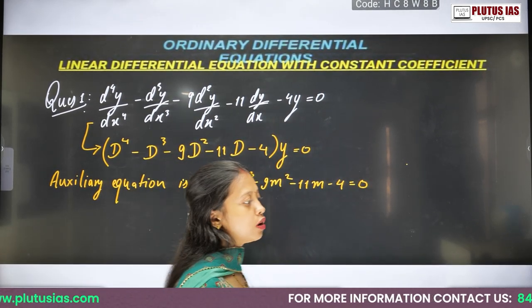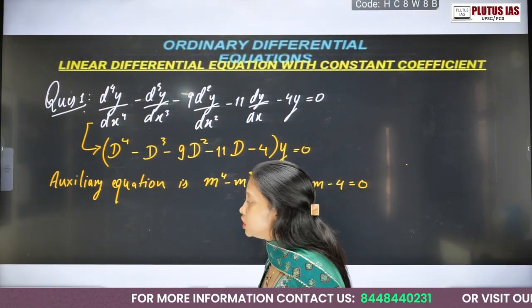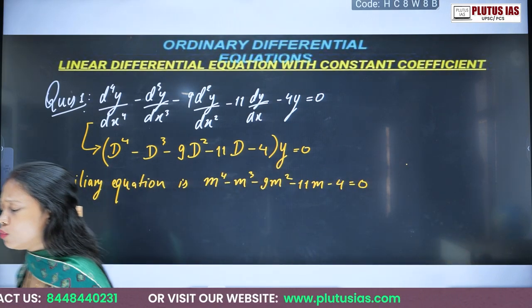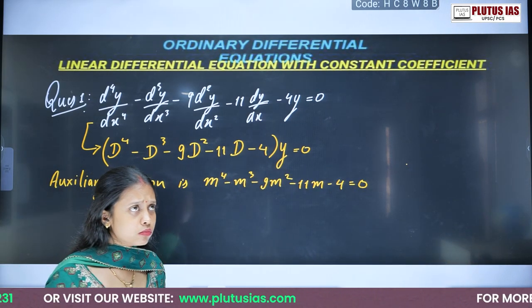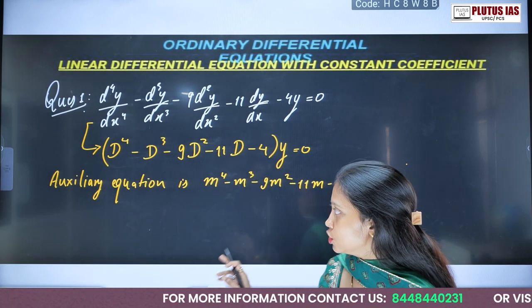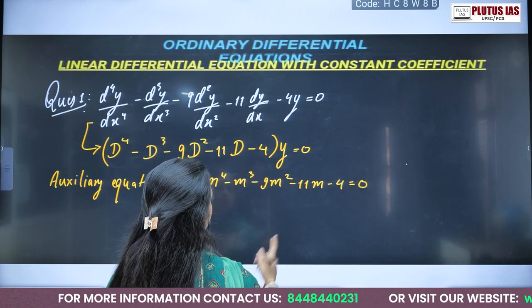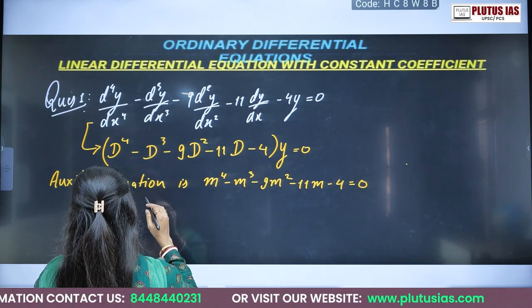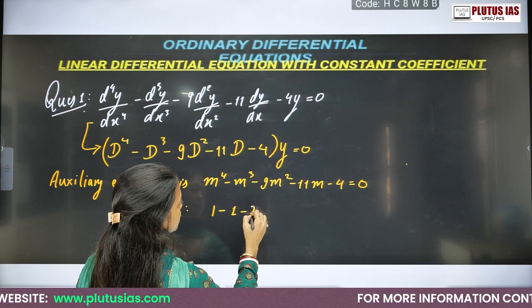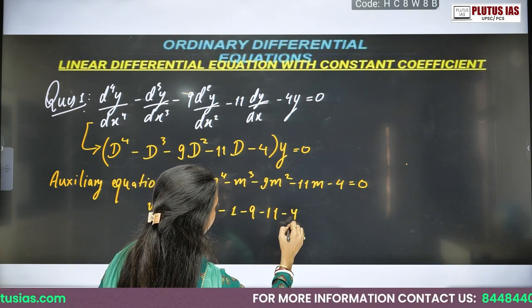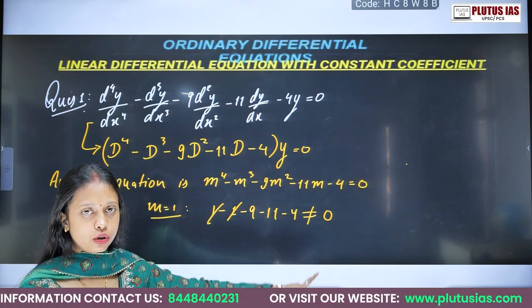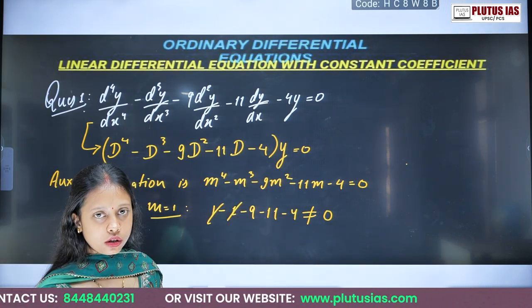Solving this fourth-degree equation — we don't have a direct formula, so we use hit and trial. Try obvious answers like 1, 2, minus 1, minus 2 — small numbers first. If I try m equals 1: 1 minus 1 minus 9 minus 11 minus 4 — that's not going to be 0, so 1 is not a root. Try minus 1: (−1)⁴ minus (−1)³ minus 9(−1)² minus 11(−1) minus 4 gives 1 plus 1 minus 9 plus 11 minus 4, which equals 0. So minus 1 is a root.